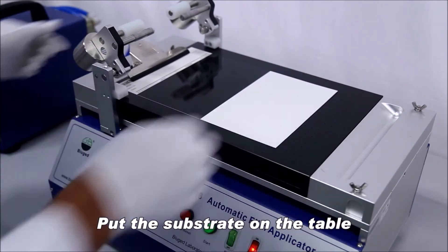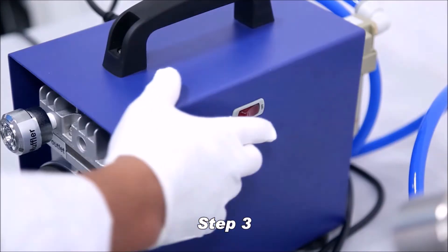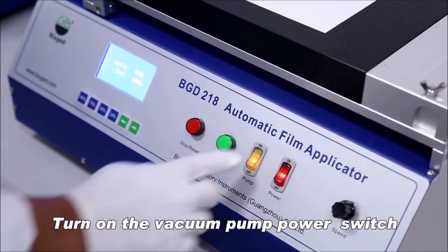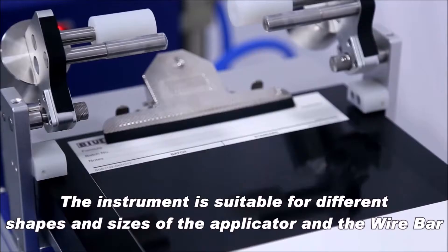Step 2: Put the substrate on the table. Turn on the vacuum pump power switch. The substrate would be absorbed on the platform.